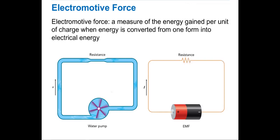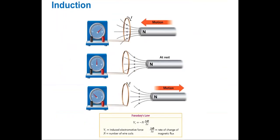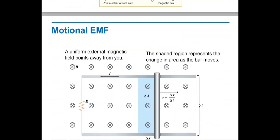Then we will learn about the induction, which is Faraday's law, that states induced electromotive force is equal to negative the number of wire coils times the rate of change in a magnetic flux.